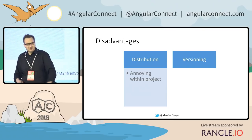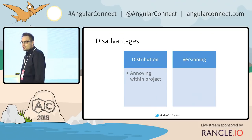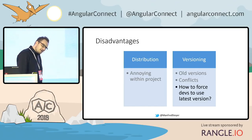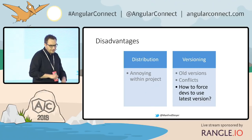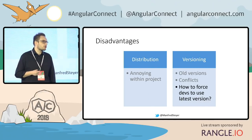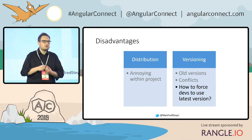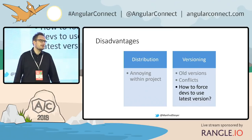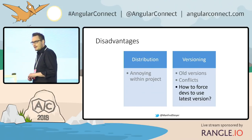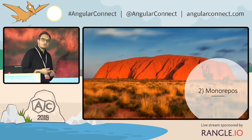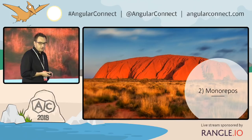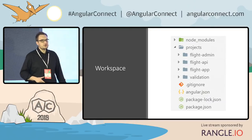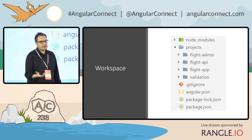Another advantage that could be a disadvantage is versioning — because versioning means old versions are out there and you can have version conflicts. Especially when it comes to one project, you want to force everyone into using the newest version. And this is exactly where the second approach comes in that I want to talk about today. The second approach is called a mono repo approach, or more precisely, monorepos.